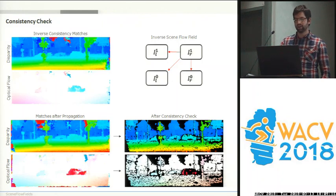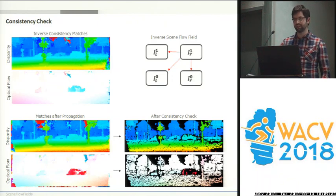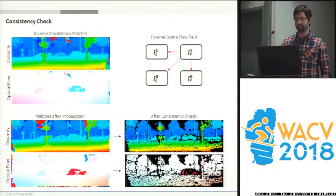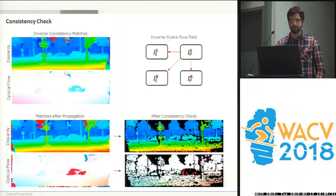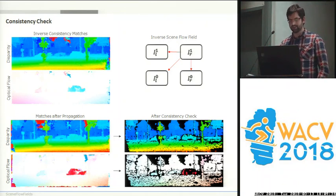To this end, we compute a second scene flow field based on the right view at the next time step, and then compare component-wise the corresponding scene flow vectors, removing them if they do not match. The remaining matches are very accurate, visualized in the lower left half of the image.